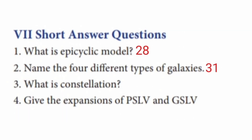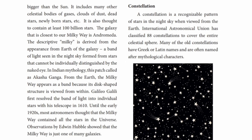Question 3: What is a constellation? The answer is on page number 33. A constellation is a recognizable pattern of stars in the night sky when viewed from the Earth.